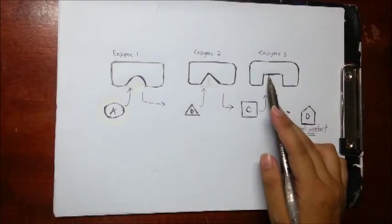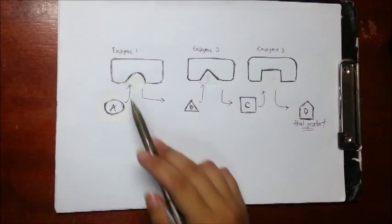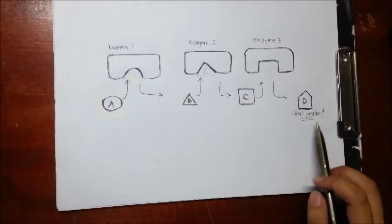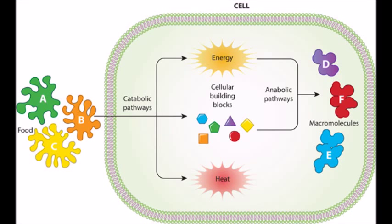Now all the substrate A has been converted to product D. Let us see the catabolic pathway. The catabolic pathway takes a large molecule and breaks it down into smaller ones.